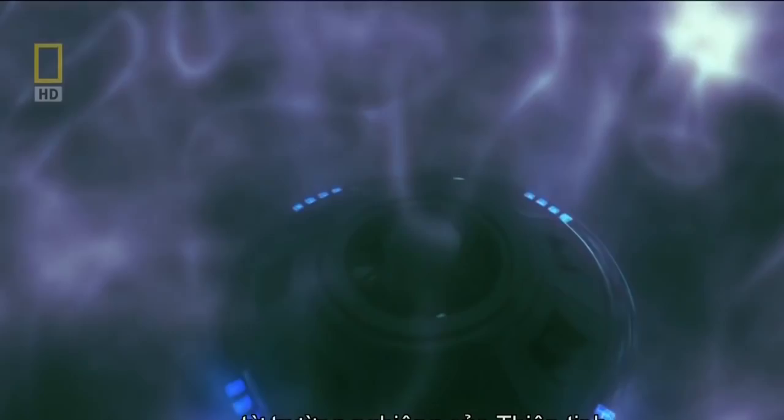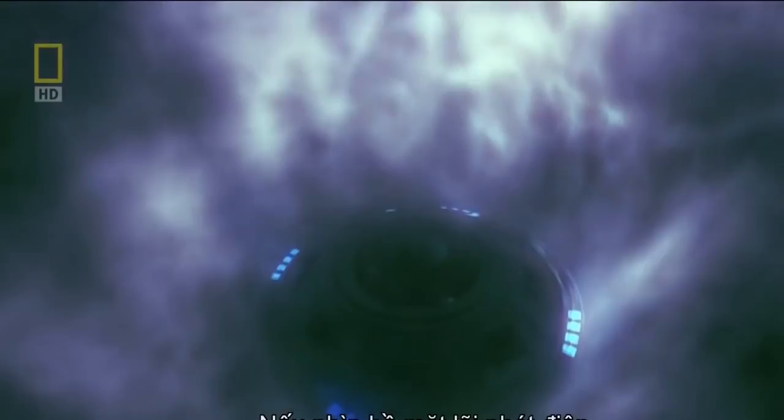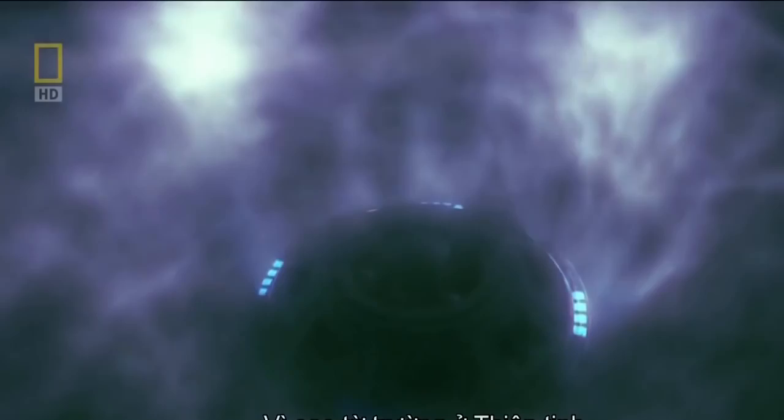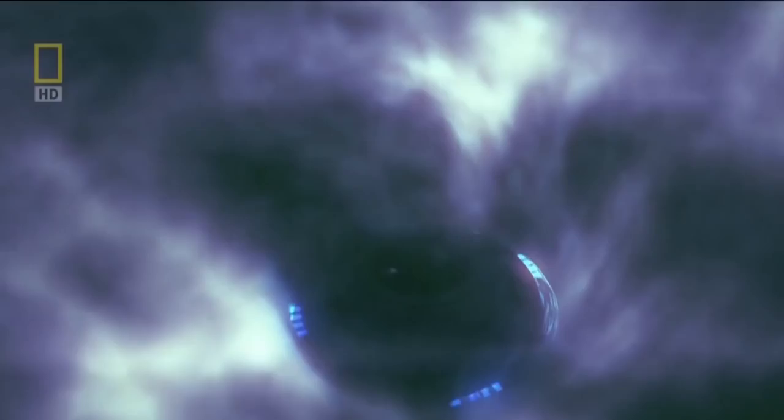If you could see down to the surface of the dynamo core where the field is generated, what you might see is parcels of fluid moving about. And they're generally so conductive that those parcels of fluid would drag field lines with them. Why Uranus's magnetic field is generated here and not in the core, no one really knows.